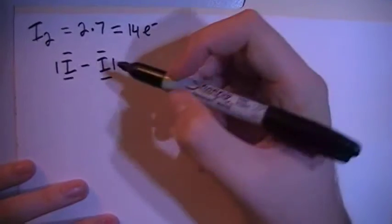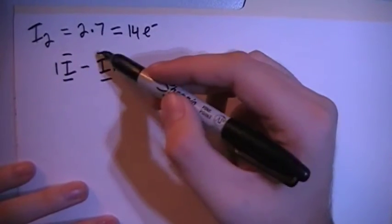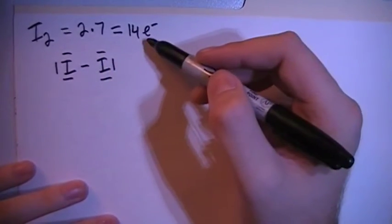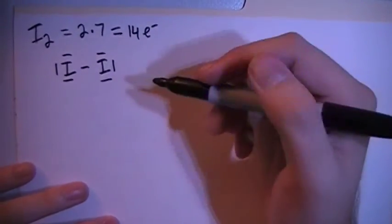And if you count the electrons, you have 2, 4, 6, 8, 10, 12, 14, which is what we have in the total. So this is actually going to be our final structure.